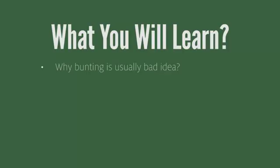We'll focus in this course on football, basketball, and baseball teams. We'll talk about bunting — why is bunting usually a bad idea? The Moneyball book makes a big point about this, but you'll understand the math behind that idea. If you've been watching Major League Baseball, you've seen a lot of teams shift their fielders to the right side of the infield and even the outfield when left-hand hitters are up. Why is that a good idea? We'll learn more about that.